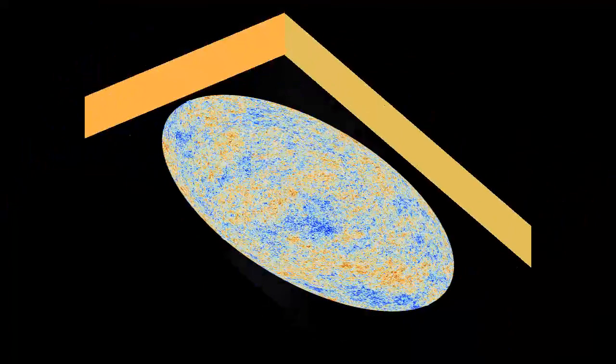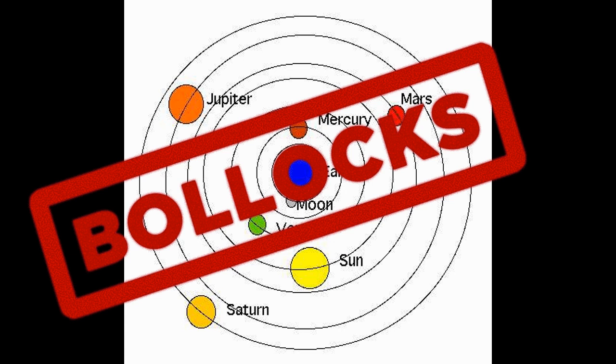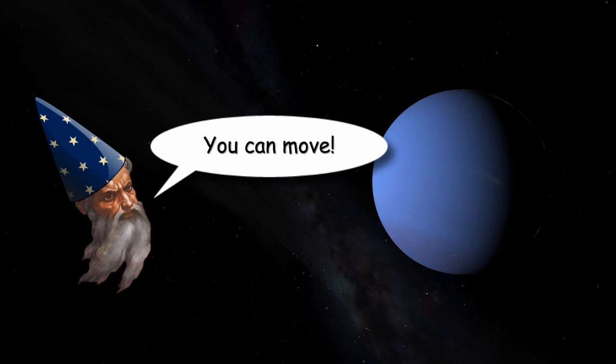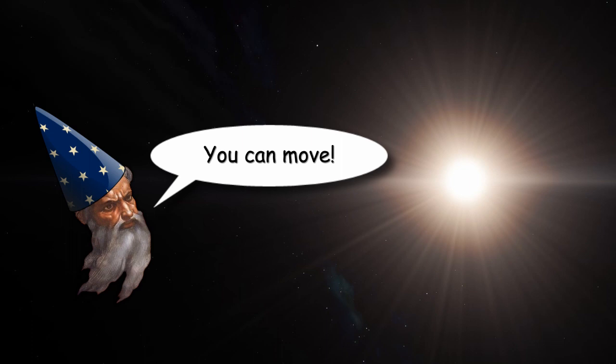In a universe where everything rotates around at least one axis, and where planets orbit stars unless they have been ejected from their host system, geocentrists think they live on a special planet made by a sky fairy just for them, with the entire universe rotating round them because they're so very important.